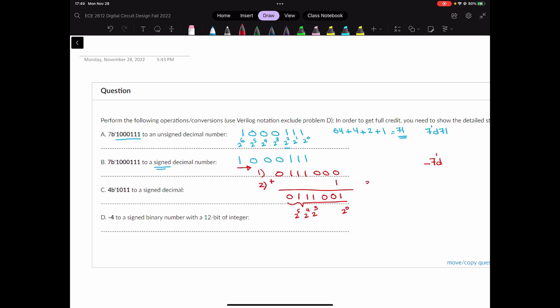So we're going to have 32 plus 16 plus 8 plus 1. That will give us 57. So it's negative 7-bit decimal 57.